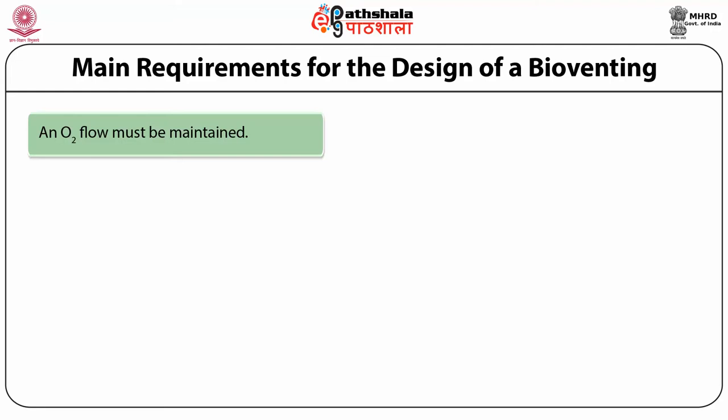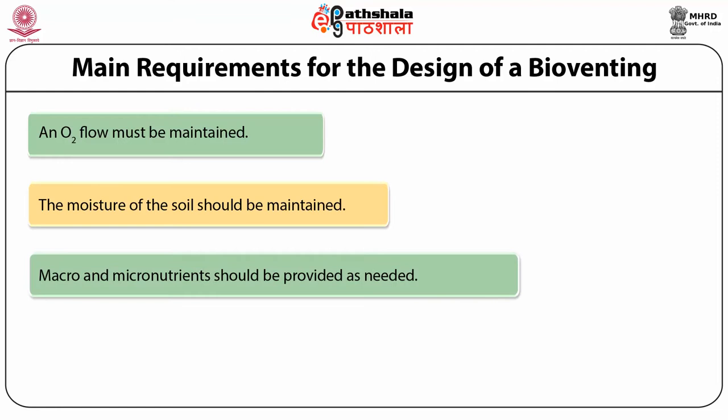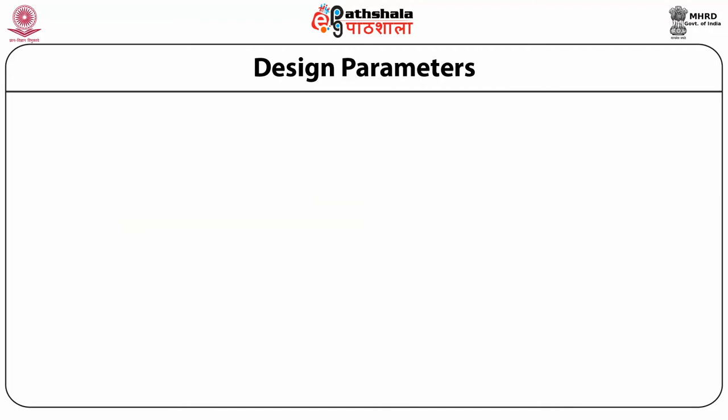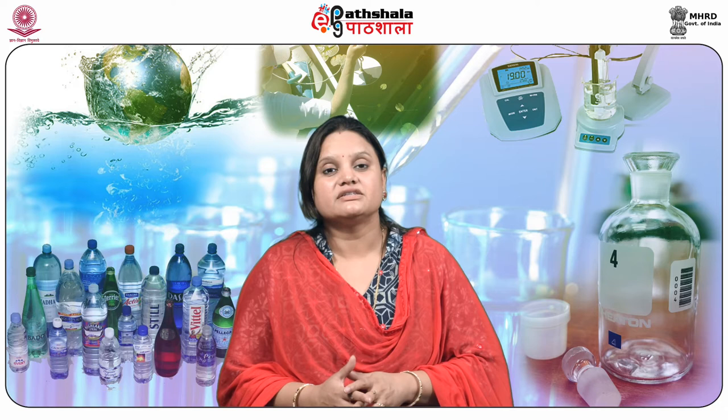The main requirements for the design of bioventing include: an oxygen flow must be maintained through the contaminated zone at a level sufficient for aerobic biodegradation of contaminants; the moisture of the soil should be maintained at an optimum value for microbial activity; and macro and micronutrients should be provided as needed. The most important design parameters include zone of influence, depth of air injection, and air injection pressure and flow rate.